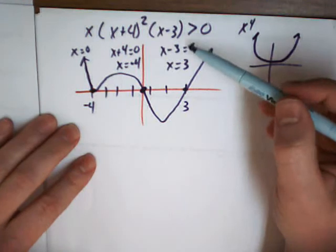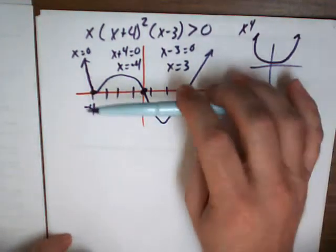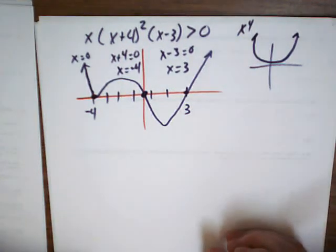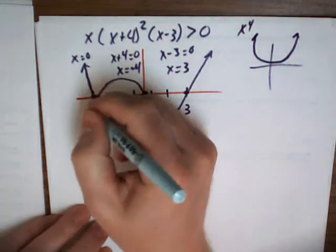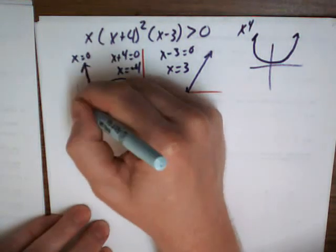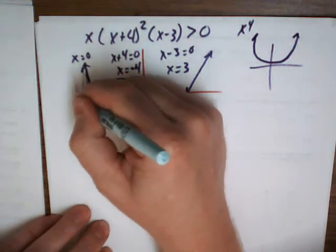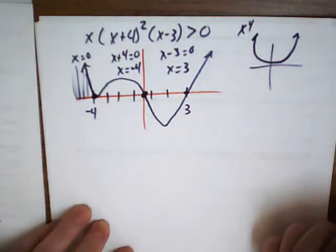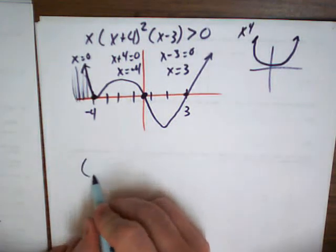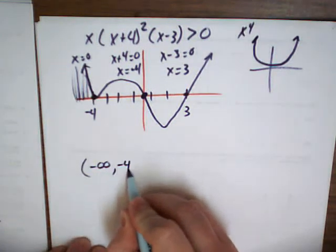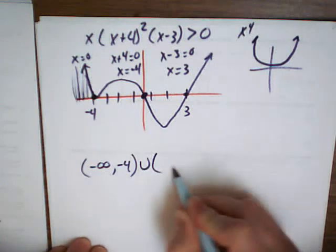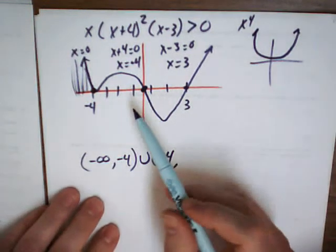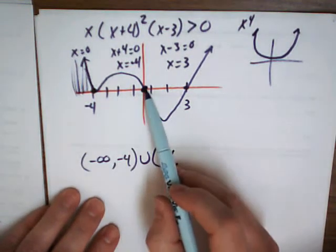So, if it says greater than 0, do we want to write about the stuff above the x-axis or below the x-axis? Above it. What happens out here — am I always going to be above the x-axis out here if I pick a number out here? It's always going to give me a positive answer. What about negative 4 — is it bigger than 0? No. So I just cut out the negative 4, and I've got to go all the way to 0.